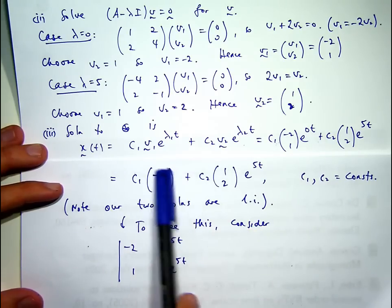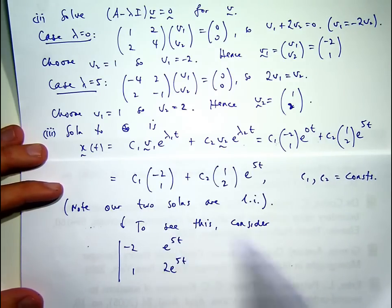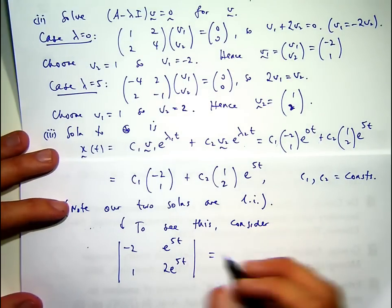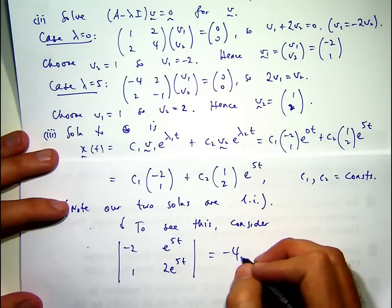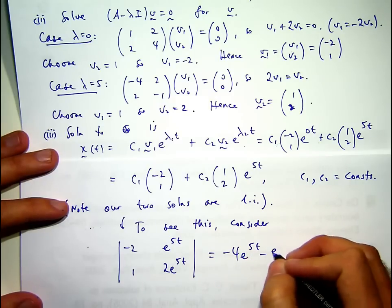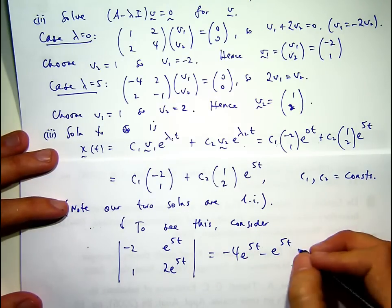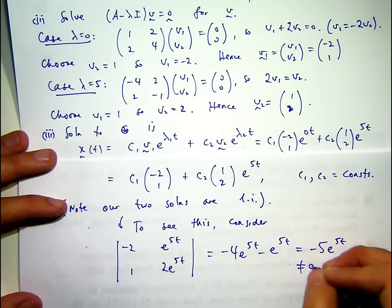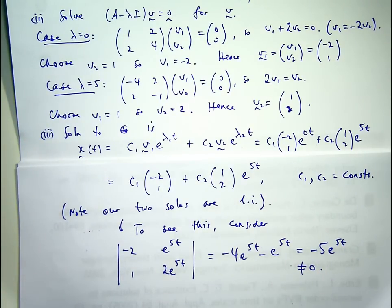So to see this, I've taken that and moved that in there and just written that as a vector. If you look at the determinant, the determinant's non-zero.